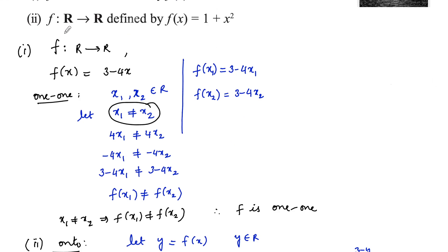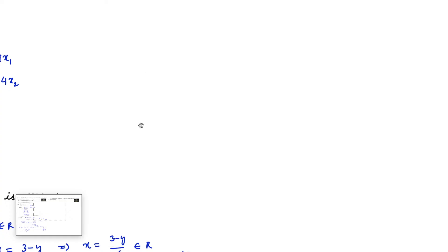Now let's check the second function: f from ℝ to ℝ defined by f(x) = 1 plus x squared.